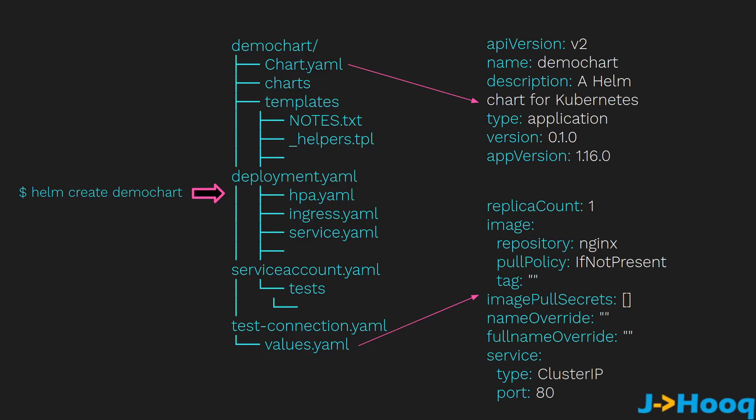The next file is values.yml. It is like a normal properties file where you store version numbers or basic configuration, so you don't have to update that configuration in each individual file. values.yml is a single central place where you go and update or modify configuration, and Helm fetches those values and updates them inside deployment.yml, service account.yml, or any other YAML configuration.